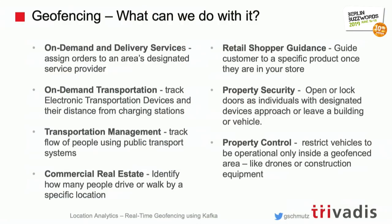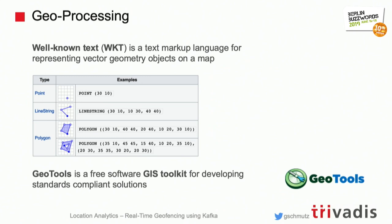What can you do with geofencing? A lot of things: delivery optimization, transportation, taxi and Uber-style services, logistics, tracking valuable goods to make sure they actually should be leaving your store. I'm still pretty new to geoprocessing, but I was always interested in geofencing together with stream analytics, because if you want to do a geofencing use case you're interested in real-time or near-real-time responses — it's not a batch use case where you find out the next day.